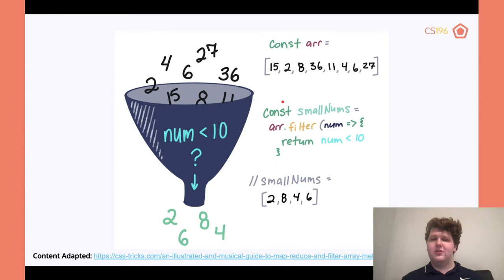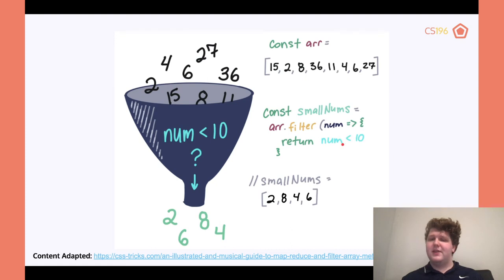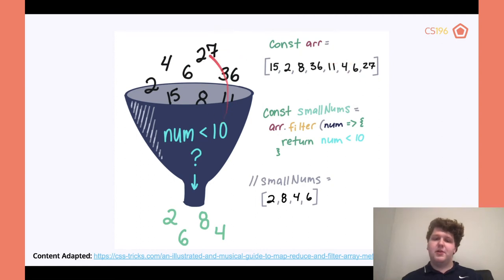Here's another visual example in case you're a more visual learner. If we give it an array and say we're going to filter by checking if the number is less than 10, looking at this array, the numbers that are less than 10 are 2, 8, 4, and 6. So if we put it through the filter function, we're only going to get 2, 6, 8, and 4.